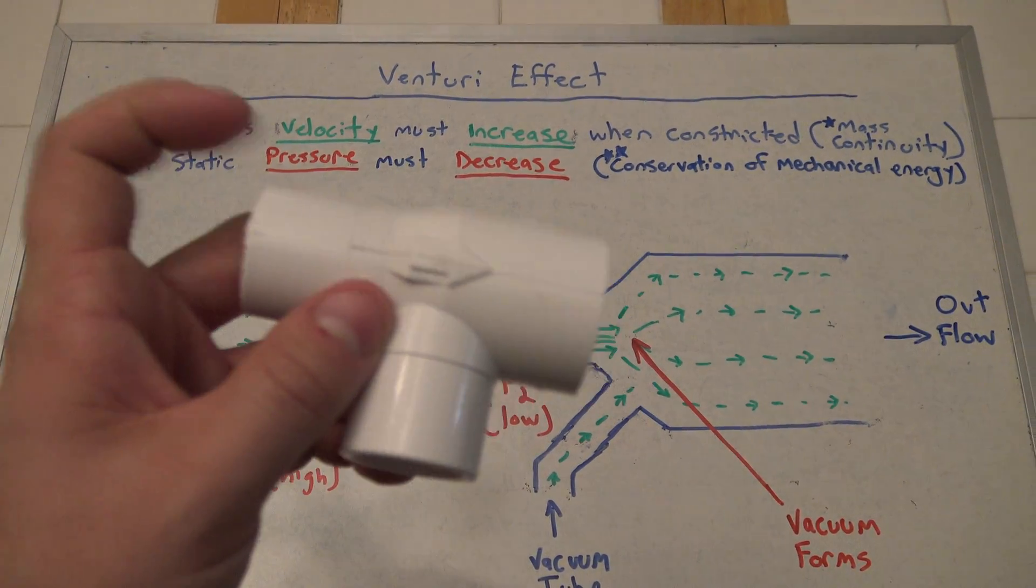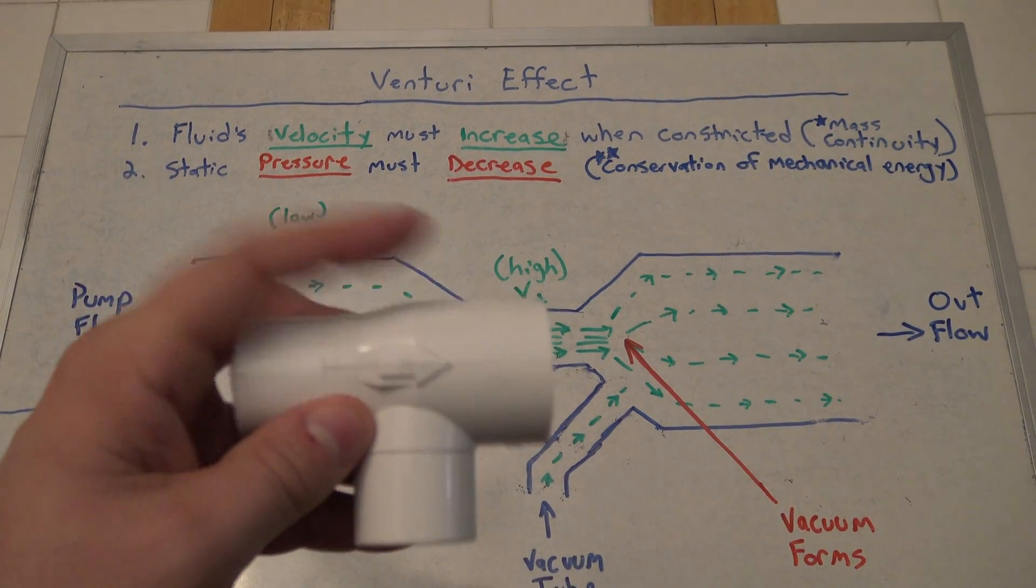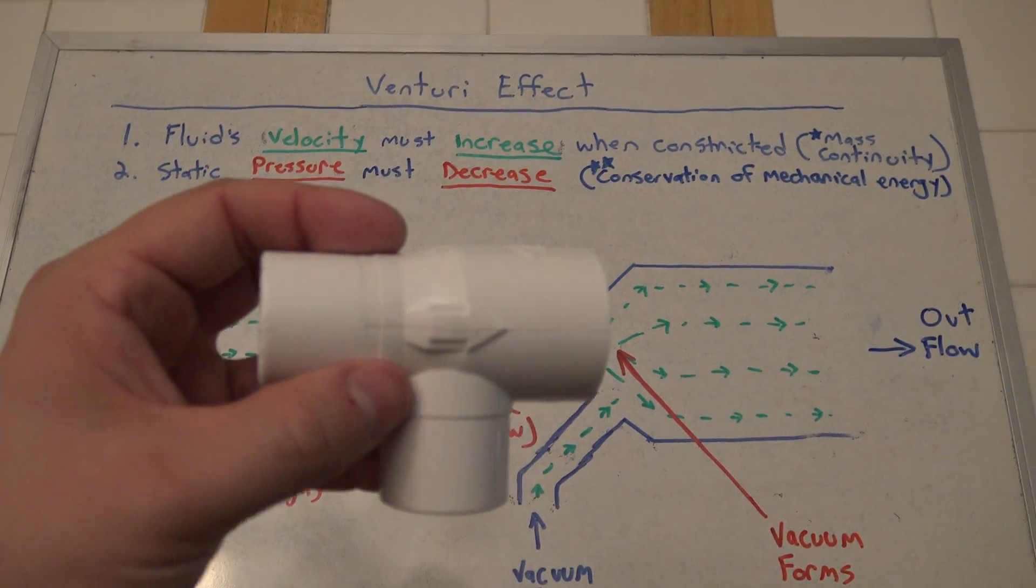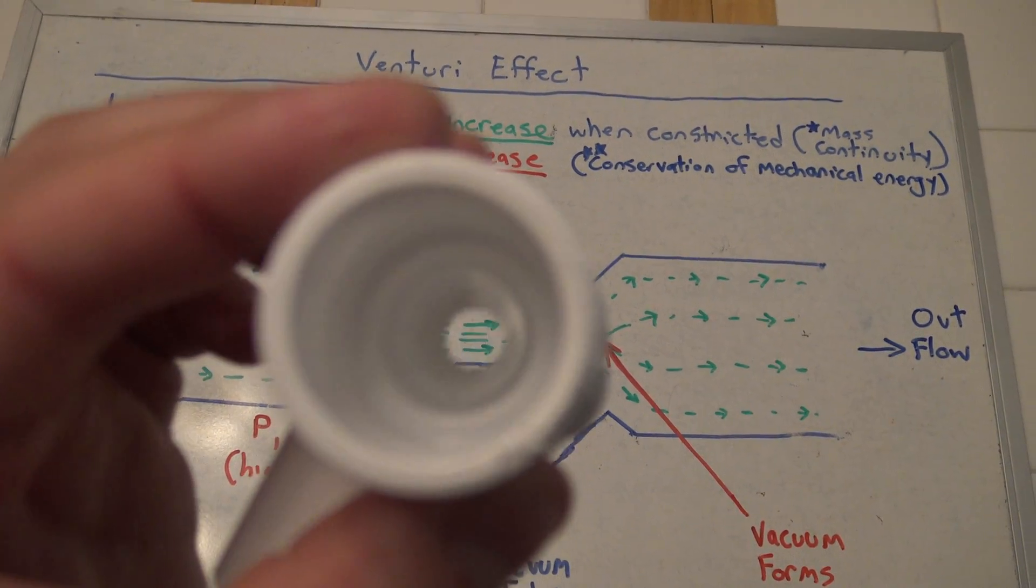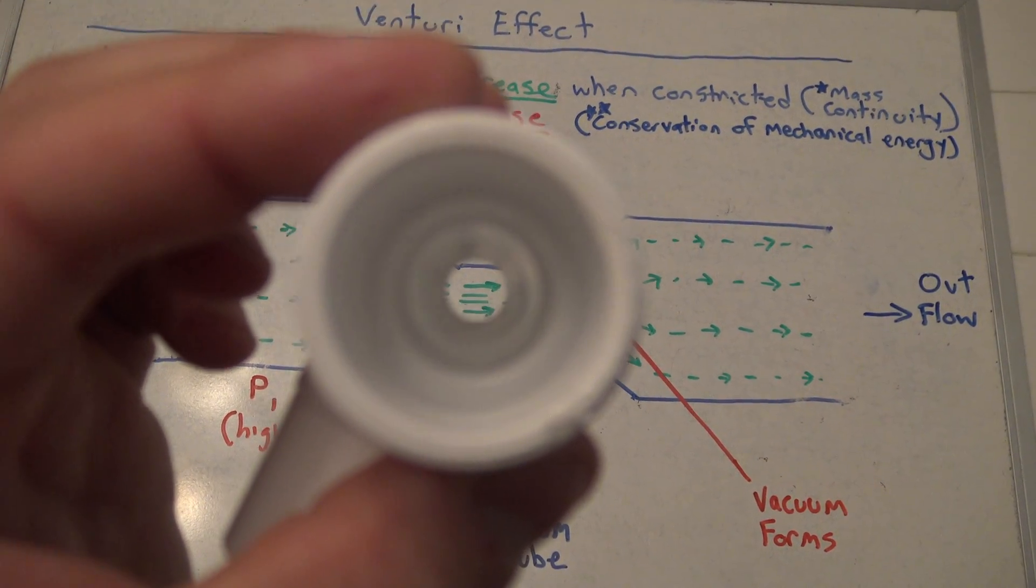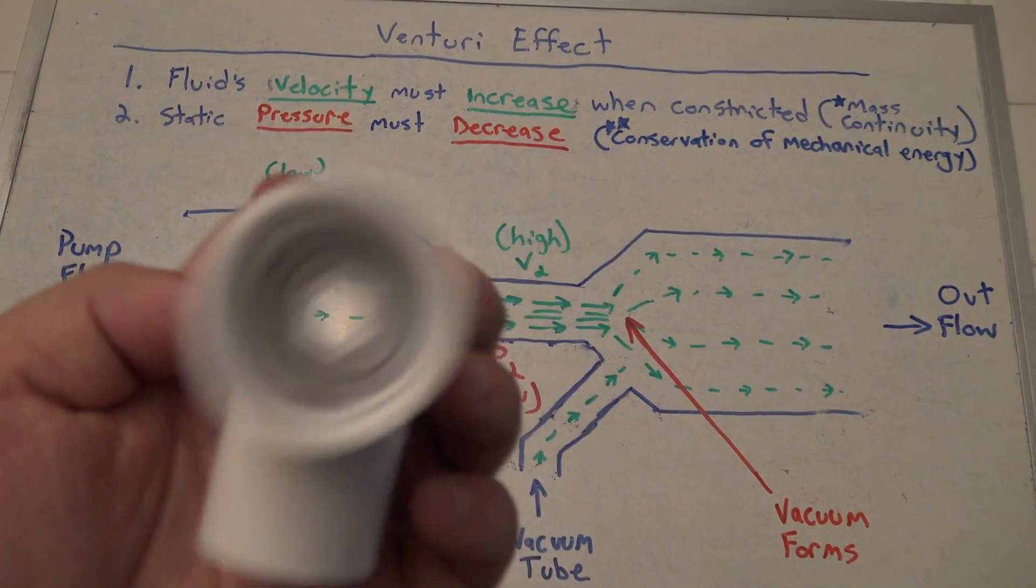You have flow going in the left to right direction here, and on this side you would have your pump. And as you can see, you've got a constriction point there, and then on this side you can see it goes back to normal.